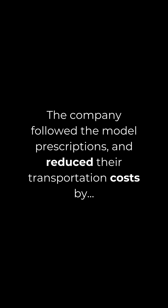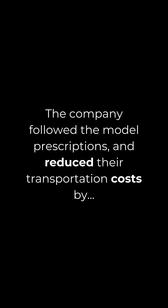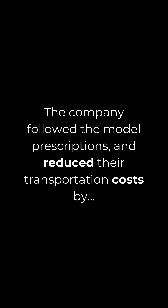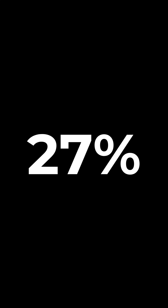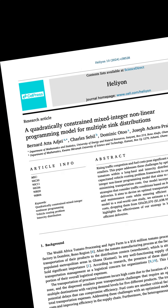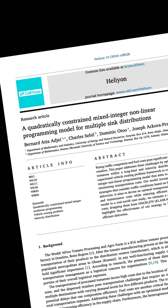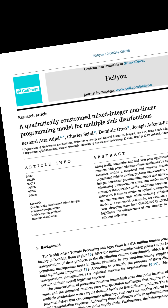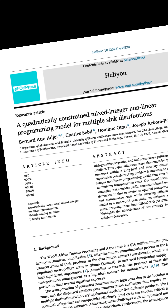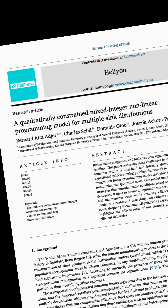The company followed the model prescriptions and reduced their transportation costs by 27%. On today's episode of Journal Club, we're going to break down this paper and find out how on earth they did that.